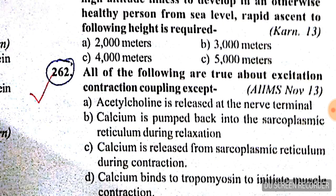Question 262: all of the following are true about excitation-contraction coupling except — acetylcholine is released at the nerve terminal (true). Calcium is pumped back into the sarcoplasmic reticulum during relaxation (true). Calcium is released from the sarcoplasmic reticulum during contraction (true). Calcium binding to tropomyosin to initiate muscle contraction is wrong — calcium binds troponin. Answer is D.